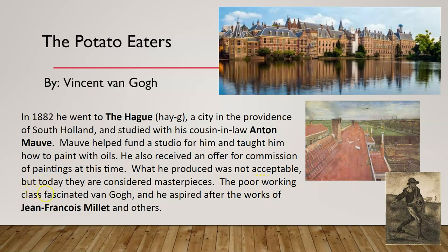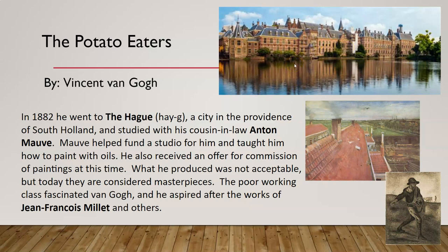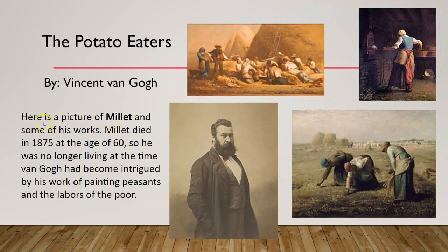The poor working class fascinated Van Gogh, and he aspired after the works of Jean-François Millet. Here is The Hague, where he moved — that's a modern-day picture — and here's some of the artwork he did while he was there, including a rooftop and a drawing of the middle class working. Millet, the guy who inspired him, died in 1875 at the age of 60, so he was no longer living when Van Gogh became intrigued by his artwork of peasants and laborers. Van Gogh looked at Millet's work and got inspiration from it.